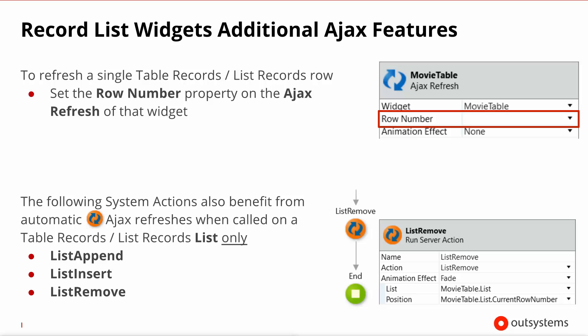Since we're talking about selective refreshment of specific rows of your table records or list records, it's worth noting that the system actions list append, list insert, and list remove are of general use in any list. When they are called on a list of a table record or list record within an Ajax request context, this will also trigger the equivalent operation on the screen side. So list append will insert something at the end of your table records, list insert will insert something at a certain position, and list remove will make one particular row of your table records disappear.